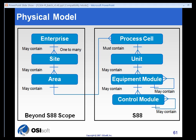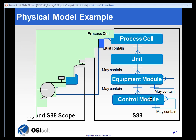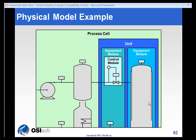For example, you might have a process cell that would have many machines. In that cell, you'd have multiple units, and each of those units would have different modules or pieces to them. Each of those pieces may or may not contain an appropriate control model. So you may have an example like this diagram where we've got a process cell with multiple units, and one of those pieces has a control module.